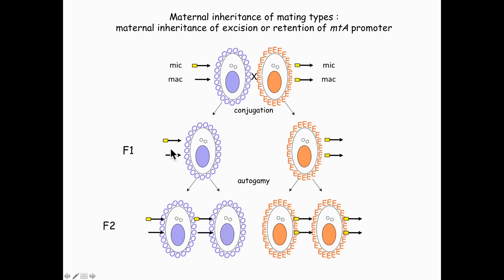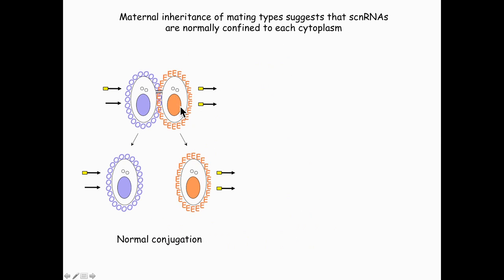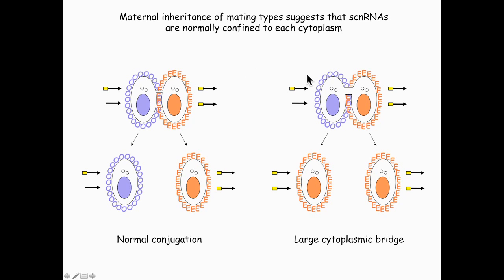Because the scan RNA pathway is required for targeting the MTA promoter, this is why you get this maternal inheritance. The idea we had is that this maternal inheritance was actually due to the fact that there was little cytoplasmic exchange during conjugation between the two mates. In normal times, there's only a very tiny fusion where the gametic nuclei can be exchanged. Sonneborn had shown already a long time ago that if you induce a large cytoplasmic bridge during conjugation, the two F1 cells both become mating type E. This gave us the idea that scan RNA pathway production, sorting, and action was largely confined to each cytoplasm.